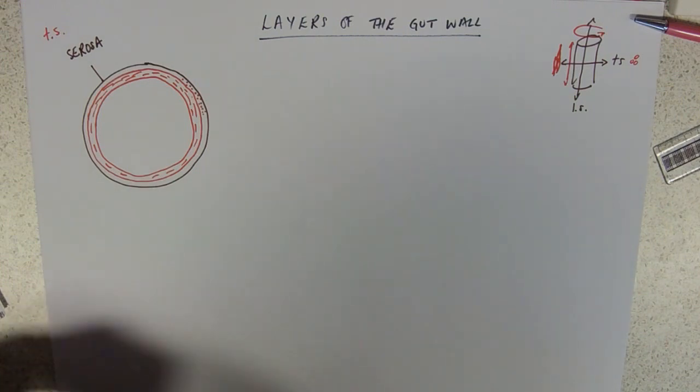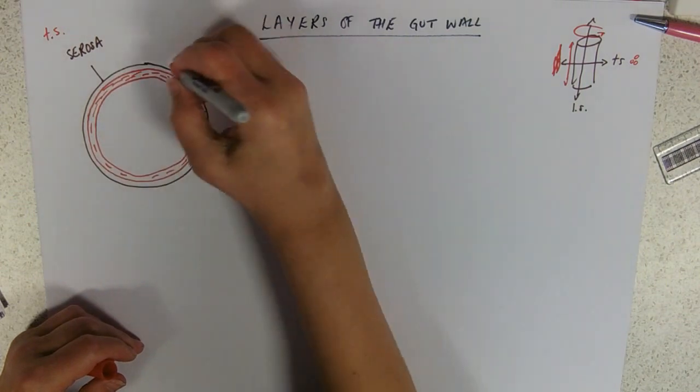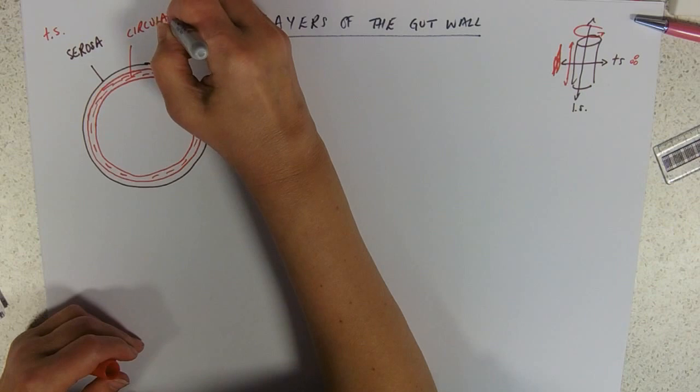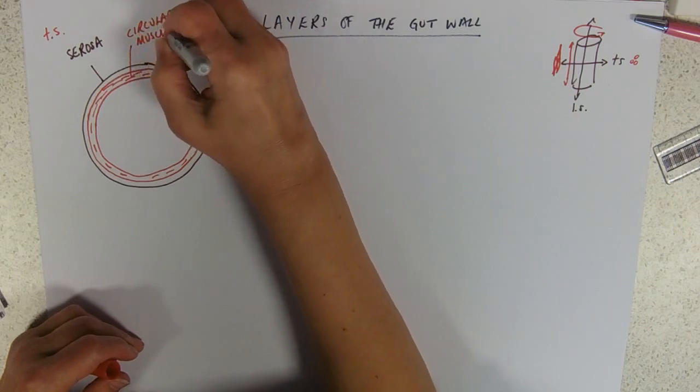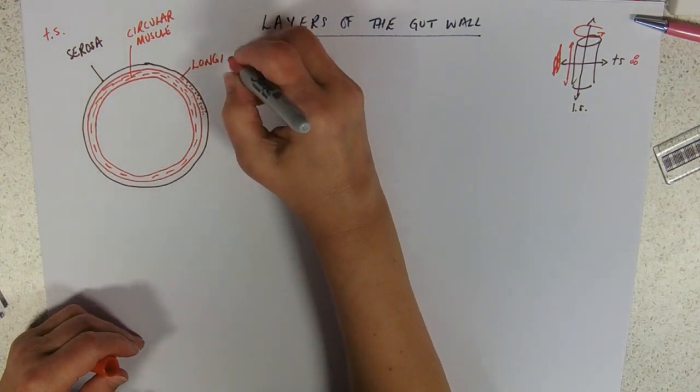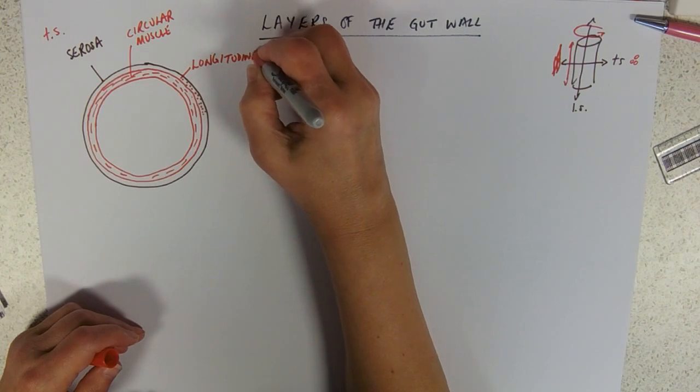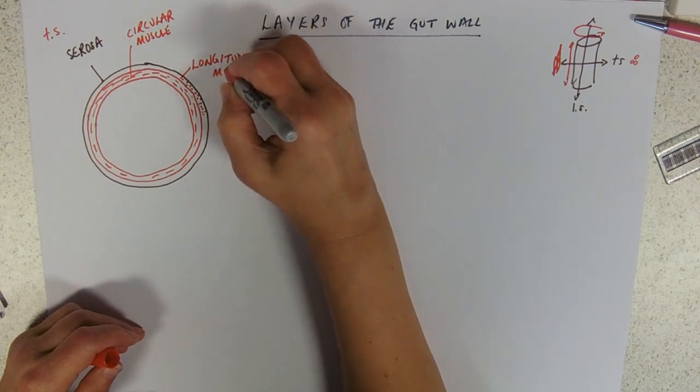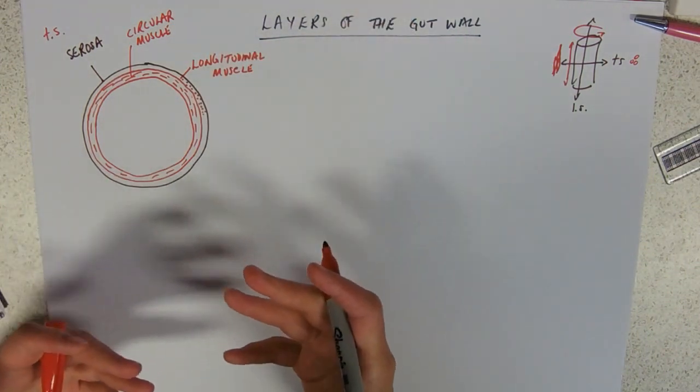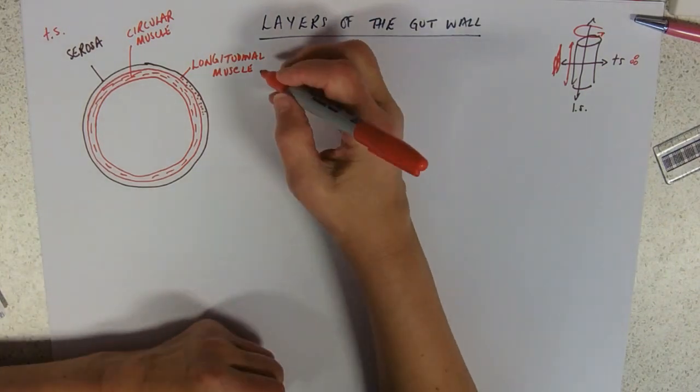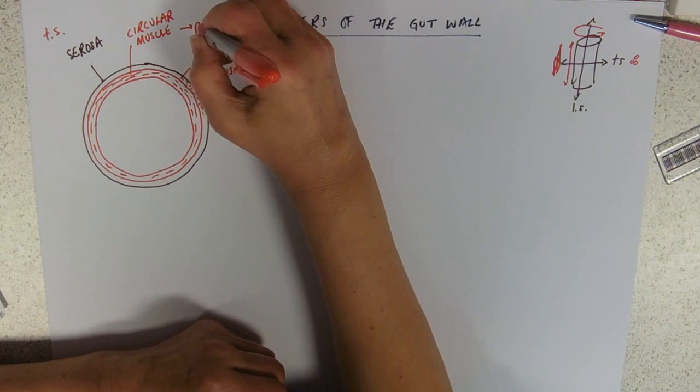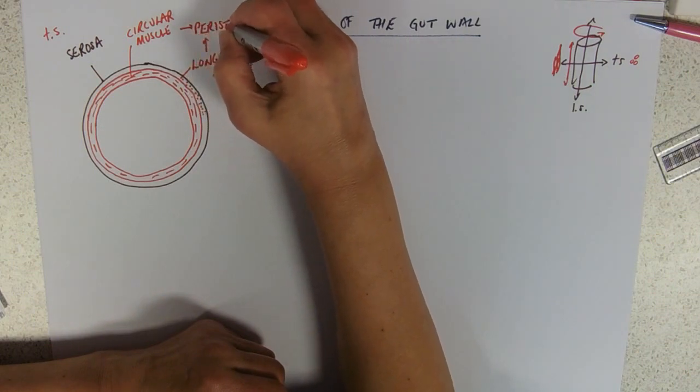Inside of those two layers of muscle we've got circular muscle and longitudinal muscle. Those serve to perform peristalsis. They're antagonistic muscles, so if the circular one's contracting the longitudinal one's relaxing and vice versa, and together they're producing the movements that are moving everything down, which is called peristalsis.